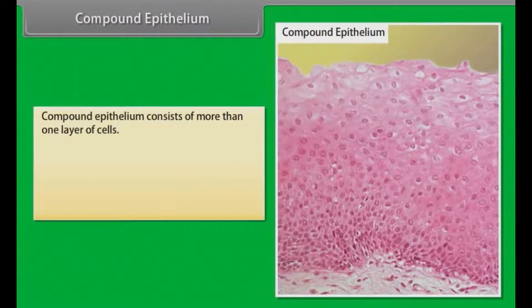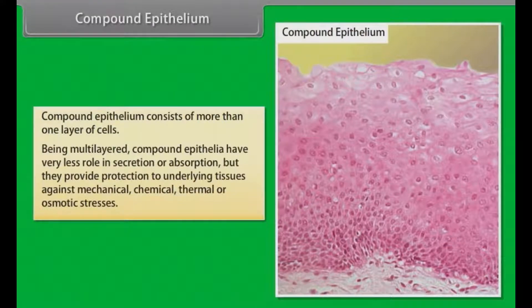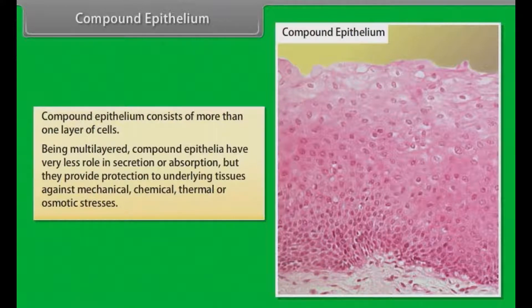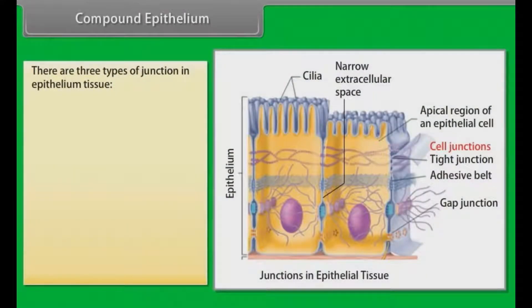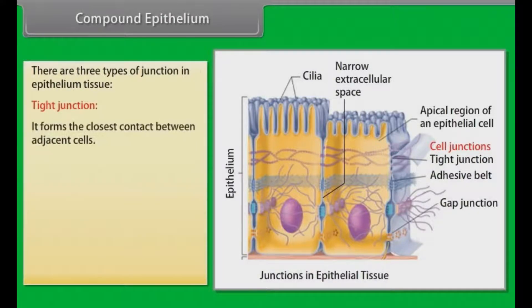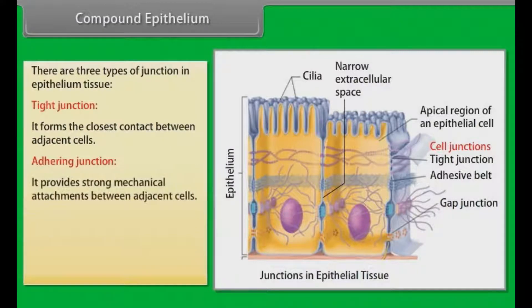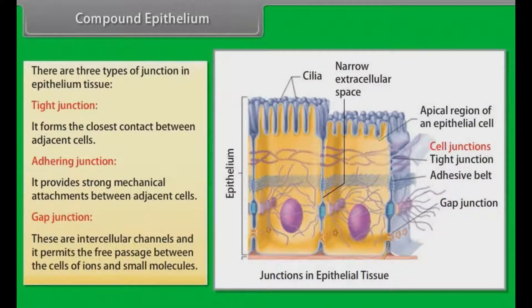Compound epithelium consists of more than one layer of cells. Being multilayered, compound epithelia have very little role in secretion or absorption, but they provide protection to underlying tissues against mechanical, chemical, thermal, or osmotic stresses. There are three types of junctions in epithelial tissue: tight junction, which forms the closest contact between adjacent cells; adhering junction, which provides strong mechanical attachments between adjacent cells; and gap junction, which are intercellular channels that permit the free passage of ions and small molecules between cells.